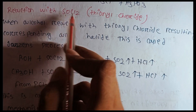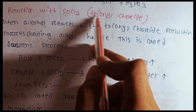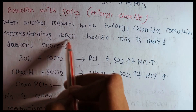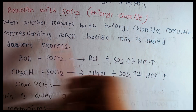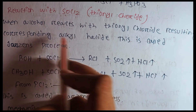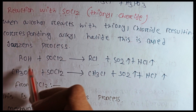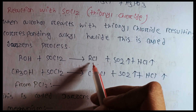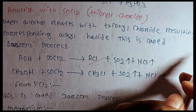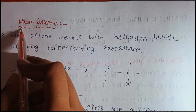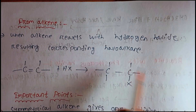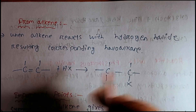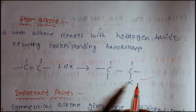When alcohol reacts with thionyl chloride (SOCl2), the resulting product is the corresponding alkyl halide. This is called the Darzens process. What is the Darzens process? We react alcohol with SOCl2 to get alkyl halide. We also react alcohol with hydrogen halide to get alkyl halide.